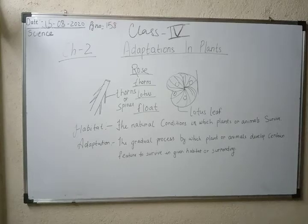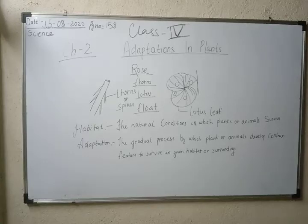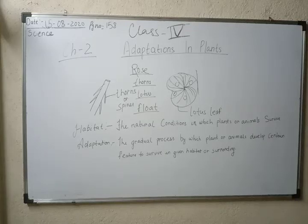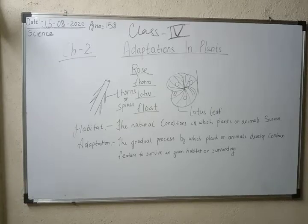Plants and animals develop special features that help them to live and grow in their habitat. These special features are called adaptation. The gradual process by which plants or animals develop certain features — that is, characteristics or modifications we see in plants in the environment — is called adaptation.